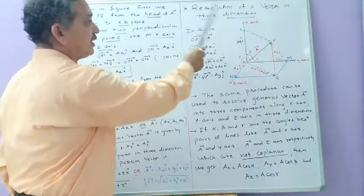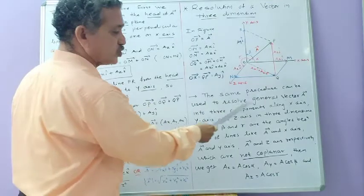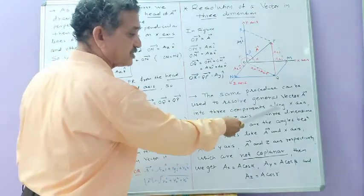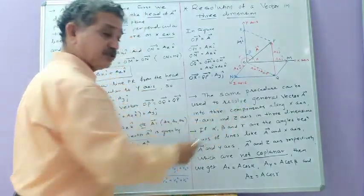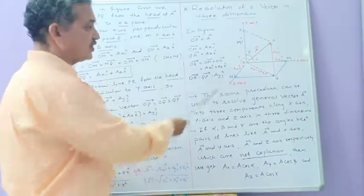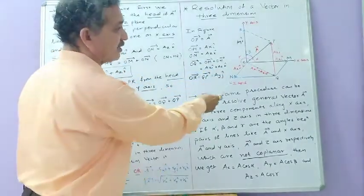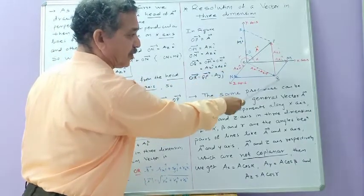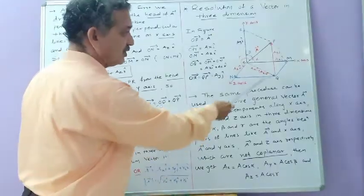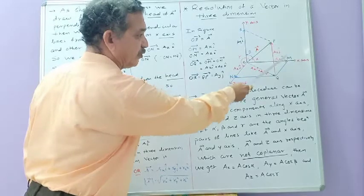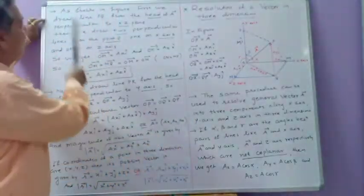Now, resolution of vector A in three dimensions: the same procedure can be used to resolve a general vector A into three components — one along the x-axis, another along the y-axis, and a third along the z-axis. Here vector OP equals vector A. From the head of vector A we draw a line perpendicular to the x-z plane, reaching point Q.